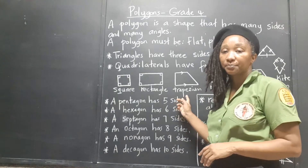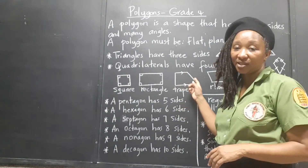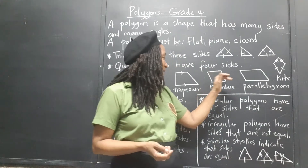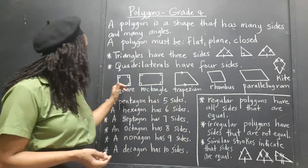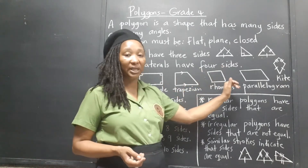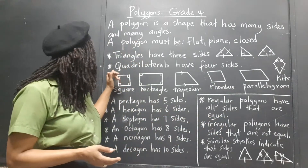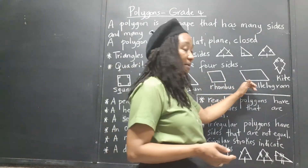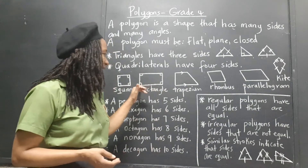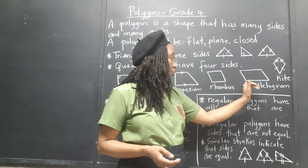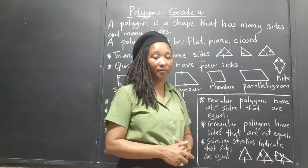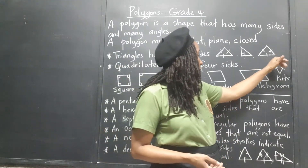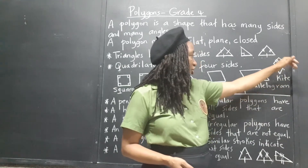The trapezium has two sides that are parallel and two sides that are not. The rhombus has all equal sides, but differs from the square in that the sides are oblique — they are slanted, whereas the square has two vertical and two horizontal straight sides. The parallelogram is similar to the rectangle except that at least two of the lines are oblique. And we have the kite, which some call the diamond, with two equal sides at the top and two equal sides at the bottom.